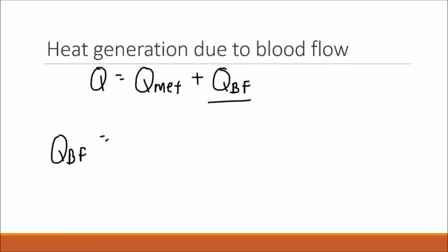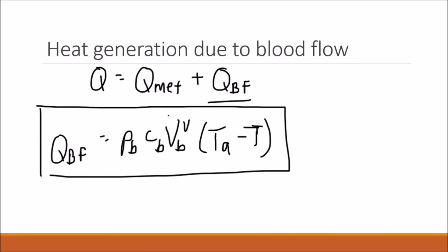We can refer to our bio heat transfer equation and find the term in there that accounts for convection due to blood flow. And this term is just the density of the blood times the specific heat of the blood times the blood flow rate per volume of tissue times the arterial temperature minus T. So this equation will give us the heat generation due to blood flow.